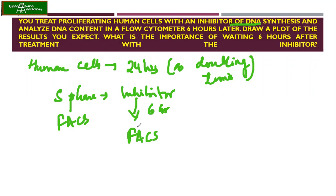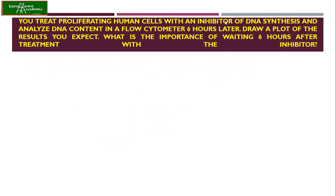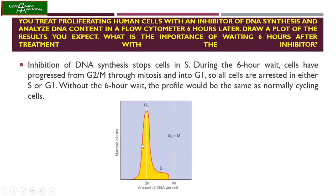To understand this, look at the graph: the number of cells is on the y-axis and the amount of DNA per cell is on the x-axis. Since inhibition of DNA synthesis stops cells in S phase, during the six-hour window, cells will progress from G2/M through mitosis and into G1. So cells are arrested in either S or G1. If you had not waited six hours, the profile would look the same as normal proliferating cells. The six-hour wait is what makes the difference.